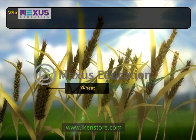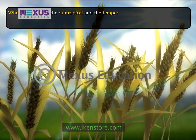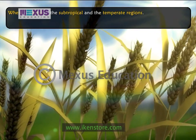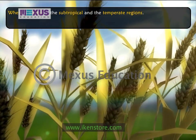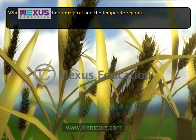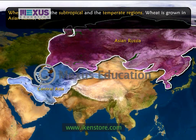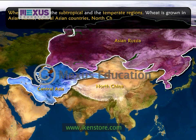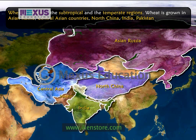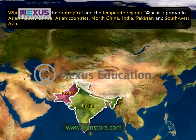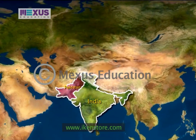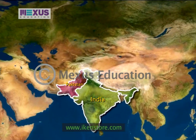Wheat is a crop of the subtropical and temperate regions. It grows well in cool climates with moderate rainfall. Wheat is grown in Asian Russia, Central Asian countries, North China, India, Pakistan and South West Asia. In India and Pakistan, wheat is cultivated during the winter season.